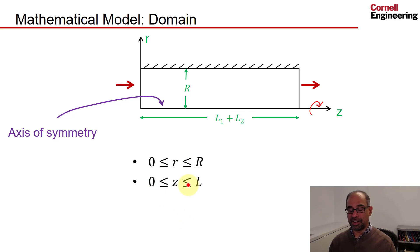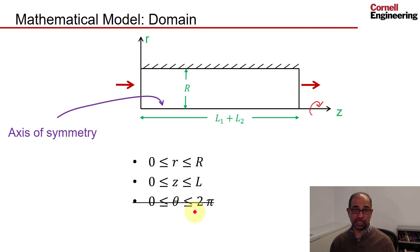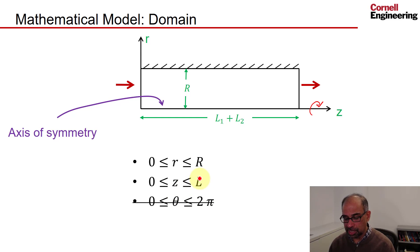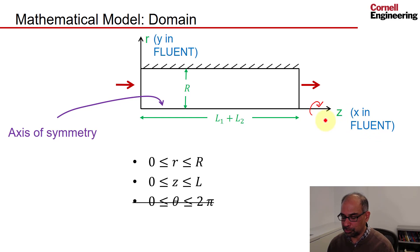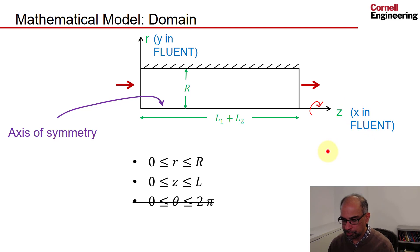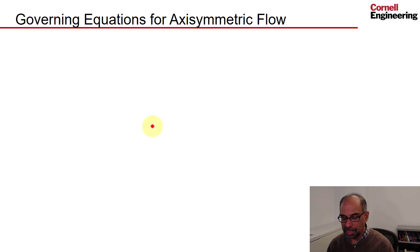The height of the rectangle equals the pipe radius and the length equals the unheated plus heated lengths, L1 plus L2. So the radial coordinate goes from 0 to R and the axial coordinate from 0 to L. The circumferential coordinate would go from 0 to 2 pi but since there's no dependence on it we can ignore it. Note that Fluent calls the axial coordinate X and the radial coordinate Y, so when you see the horizontal axis think axial and the vertical axis think radial.